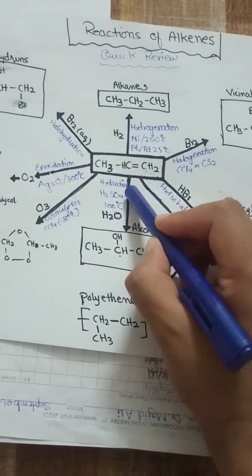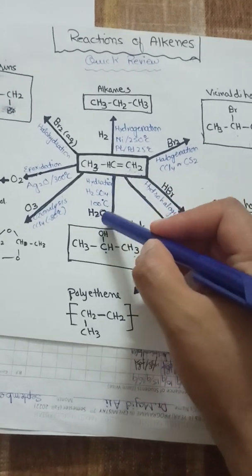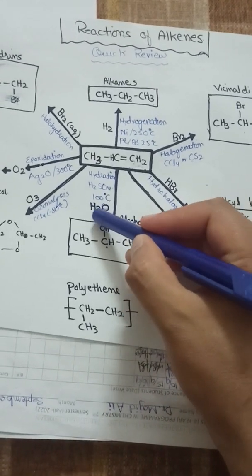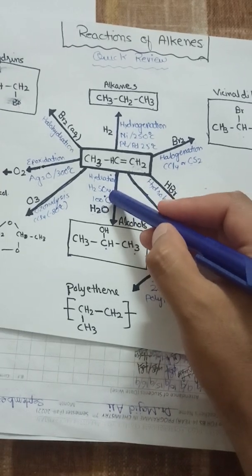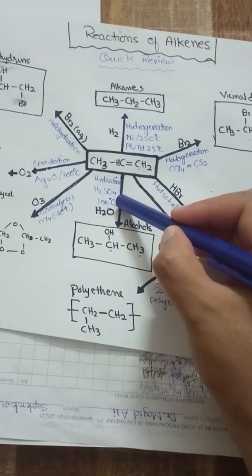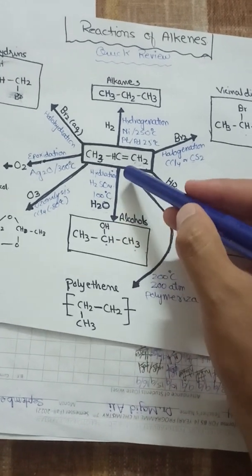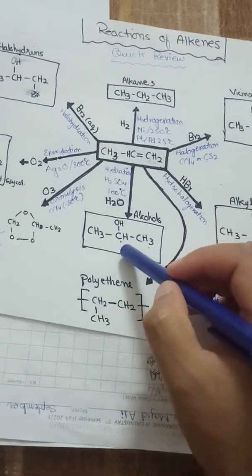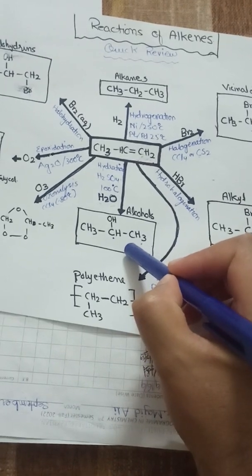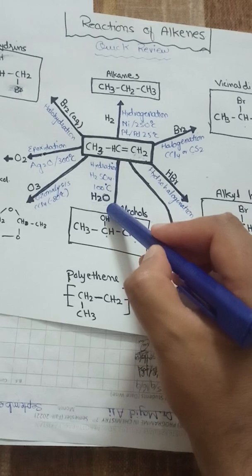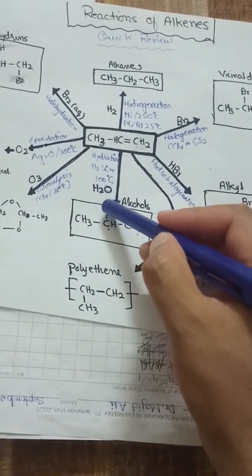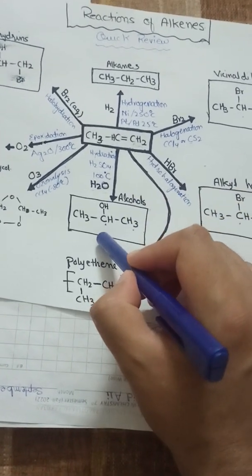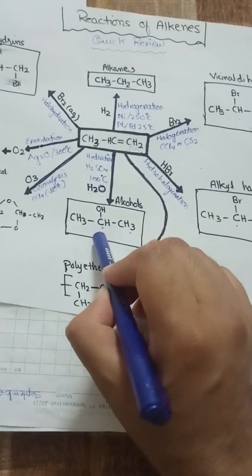The next reaction is hydration, which is the addition of water. This reaction, also called hydrolysis, occurs in the presence of hydrogen ions produced by sulfuric acid at 100°C, and we get alcohols from alkenes. Again, Markovnikov's rule applies: the hydroxyl group attaches to the carbon with fewer hydrogens, and hydrogen attaches to the carbon with more hydrogens. So we get 2-hydroxypropane, or 2-propanol.